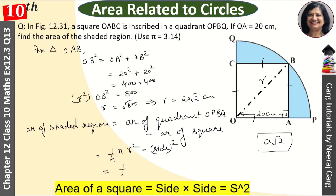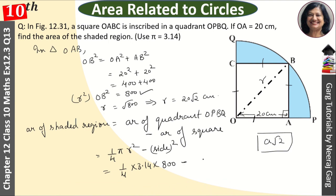Then 1 upon 4 π, in place of π put 3.14. R square was 800, so directly put 800. Minus, side is 20, so 20 square. This 4 gets cancelled. We get 200.